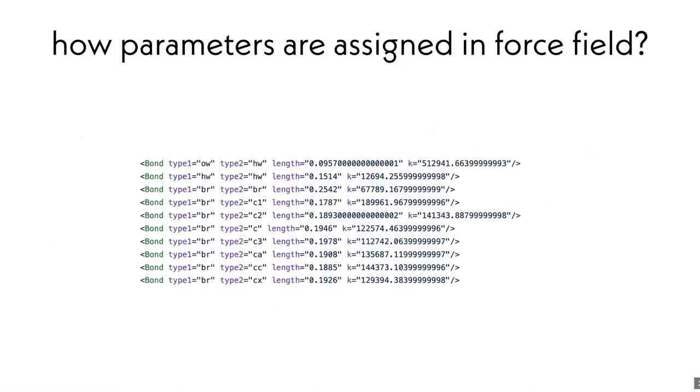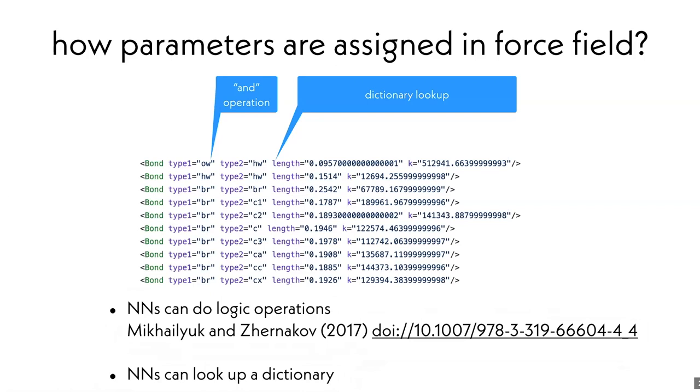Then the next question we want to ask is: if you can do the atom types, can you do the bond types and therefore bond parameters? These are apparently two questions that consist of an AND operation, which takes one end of the bond and the other end and uses an AND operator to join them together, as well as a dictionary lookup. The first half is a bond typing scheme, so to speak, and the second is the parameterization scheme. Because neural networks, even the simplest feed-forward neural networks, can do logical operations and any kind of neural networks can look up a dictionary, we hypothesize that maybe graph nets, after doing message passing on the nodes, can also come up with bond types and therefore parameters.